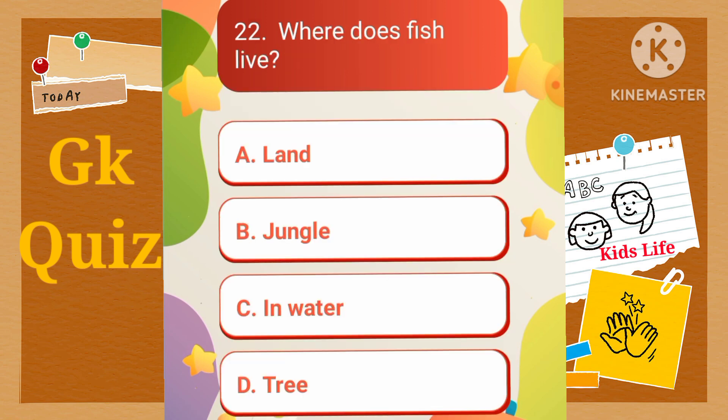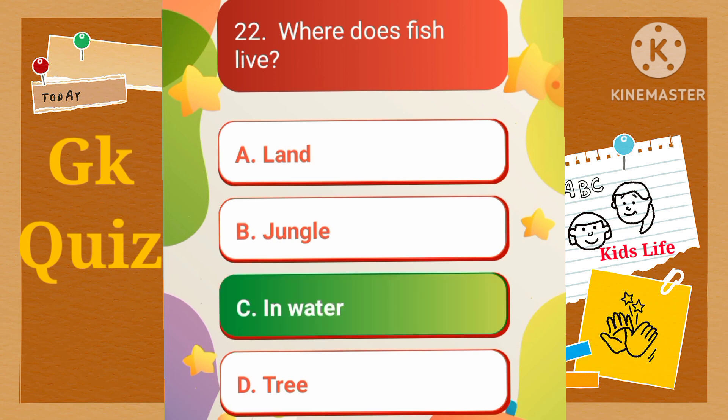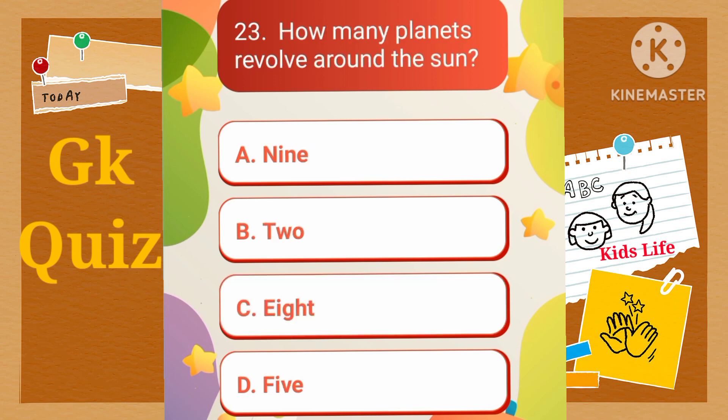Where does a fish live? A) Land, B) Jungle, C) In water, D) Tree. How many planets revolve around the sun? A) 9, B) 2, C) 8, D) 5.